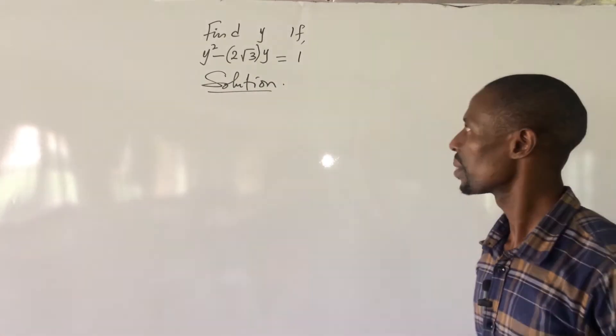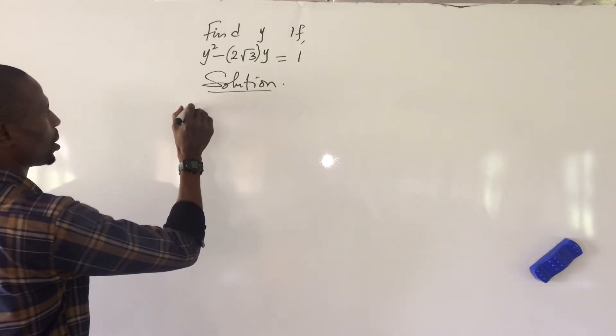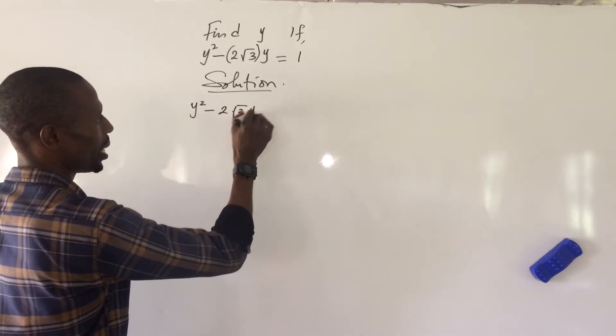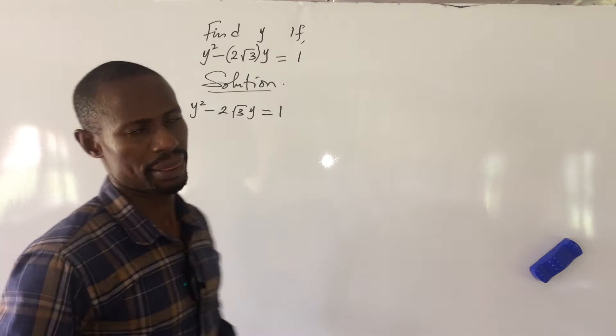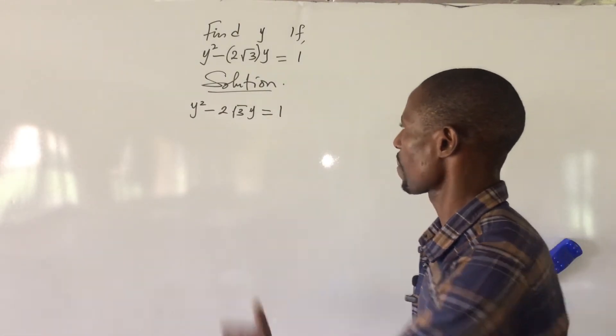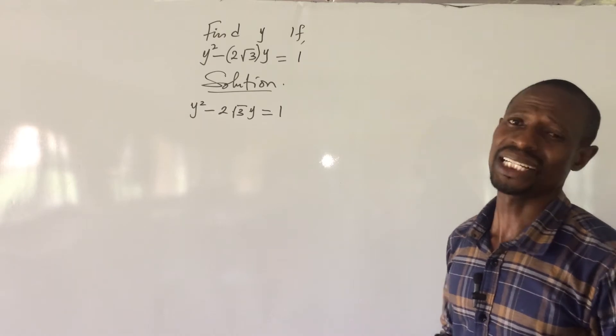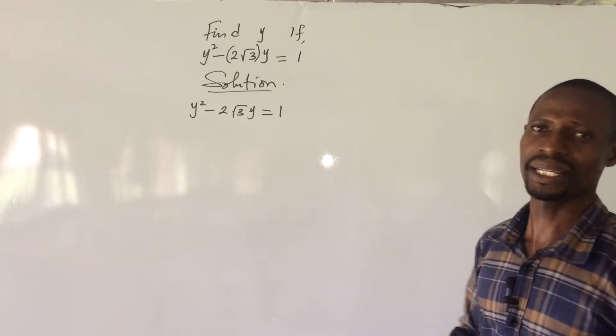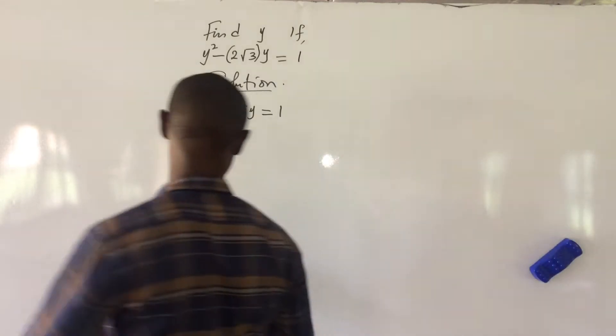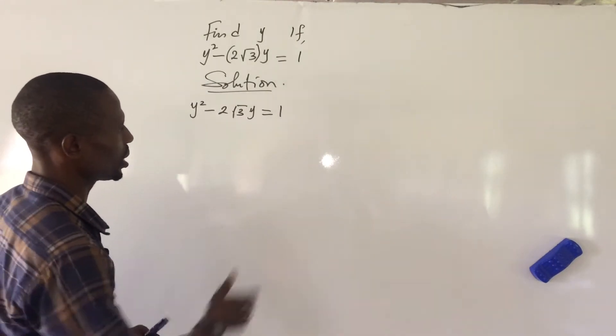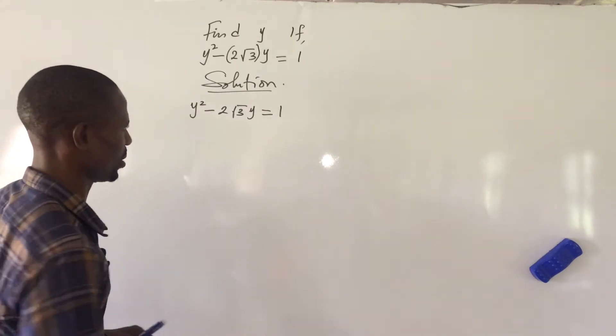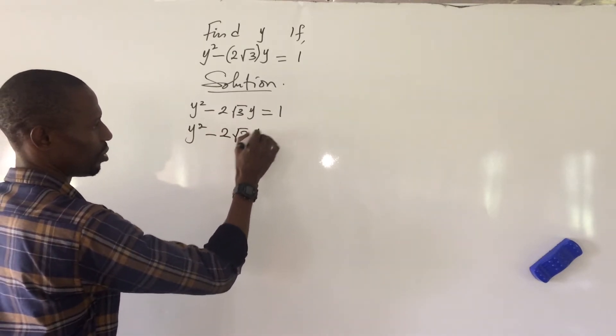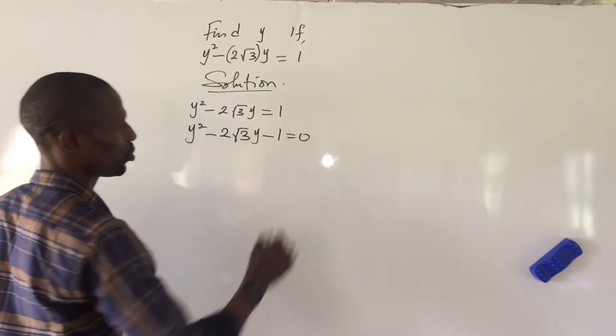So, from your solution, we write out our equation which is y squared minus 2 root 3 y equal to 1. Now, in this question, we're going to use the formula method and in using the formula method, we have to move the constant on the right-hand side to the left-hand side, leaving the right-hand side to be 0. So, if we do that, here we have invisible plus. So, once it crosses the sign of equality, turns to minus. Hence, this expression will become y squared minus 2 root 3 y minus 1 equal to 0.